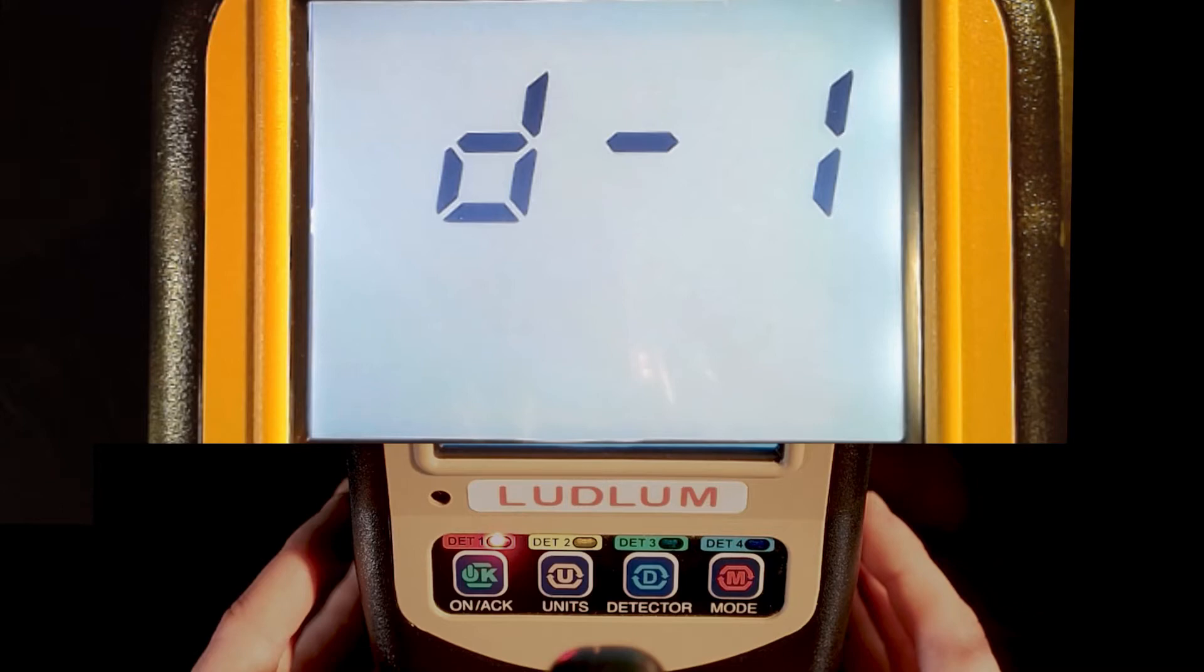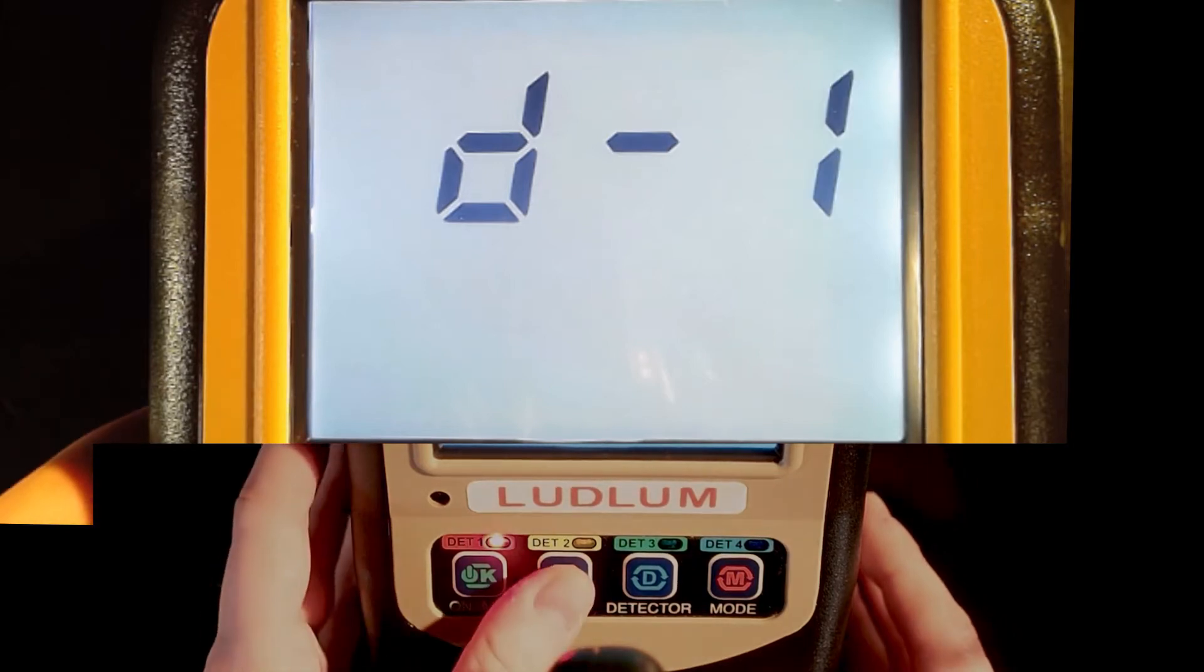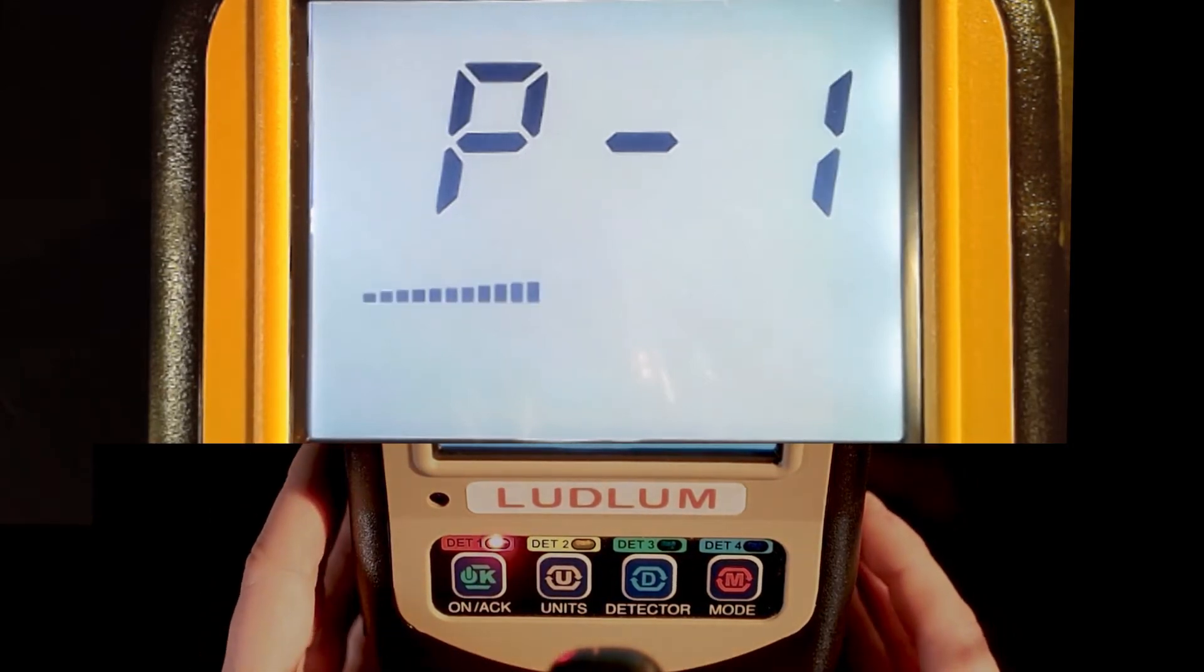D-1 should be displayed. Press the UNIT button to go to page 1 of the parameters. P-1 will be displayed.